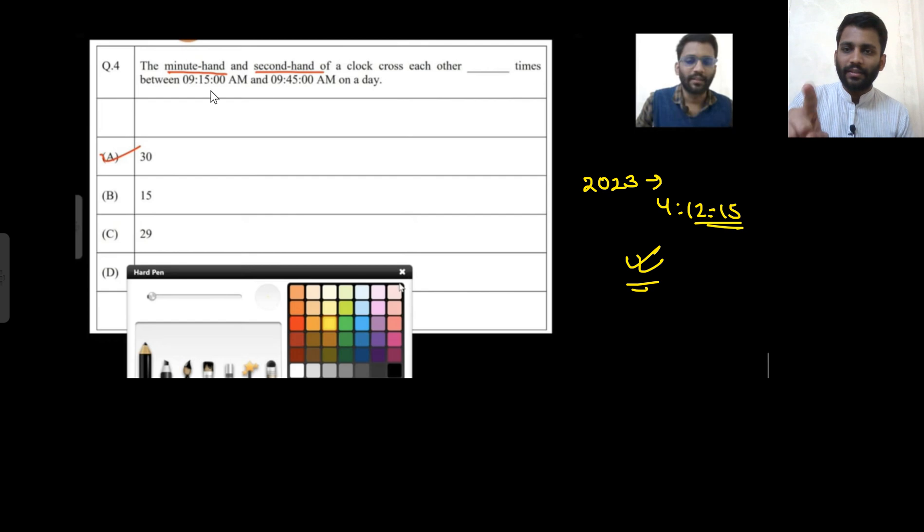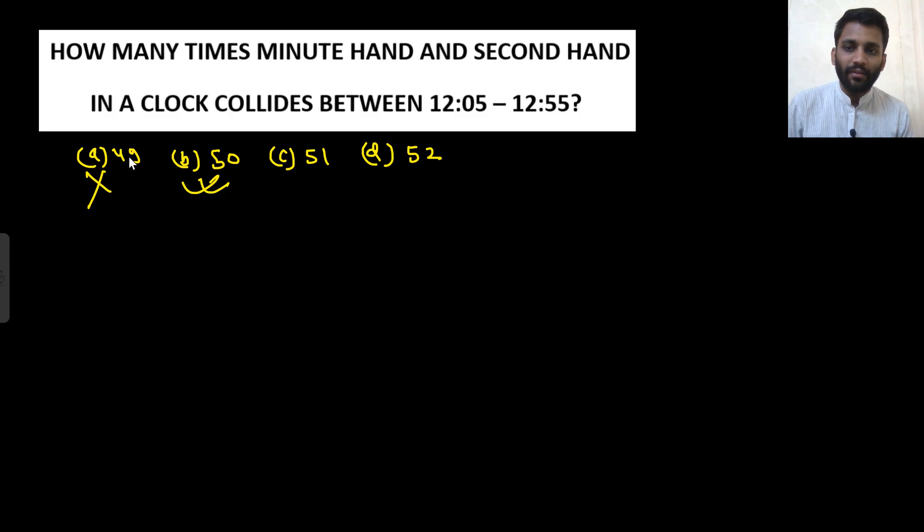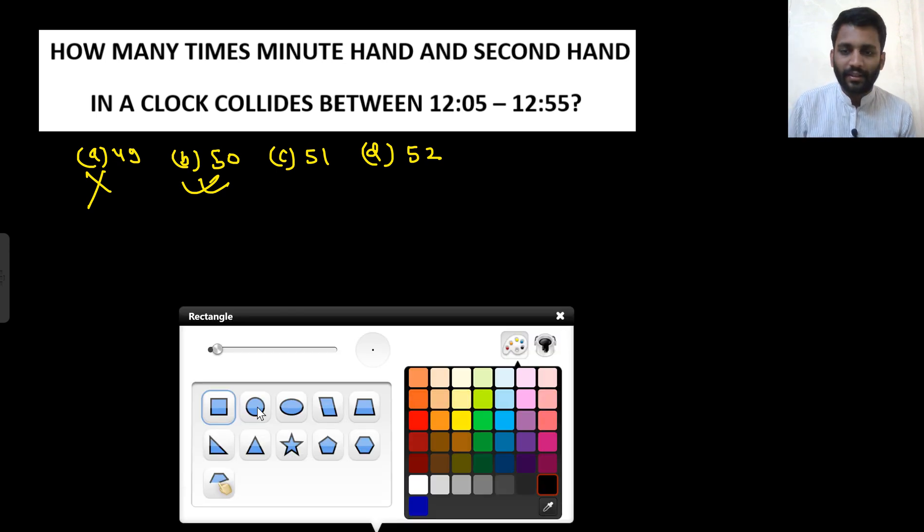In 2023, the time was 4:12:15, and you can see the same question was there: minute and hour hand of a clock crosses each other, how many times between 9:15 to 9:45. The answer was 30, not 29. So here the answer would be 50, not 49.